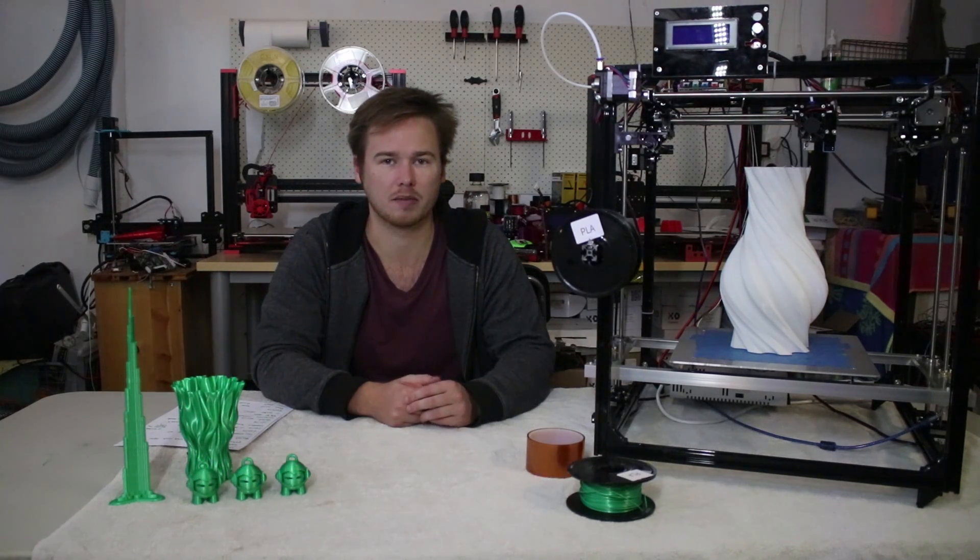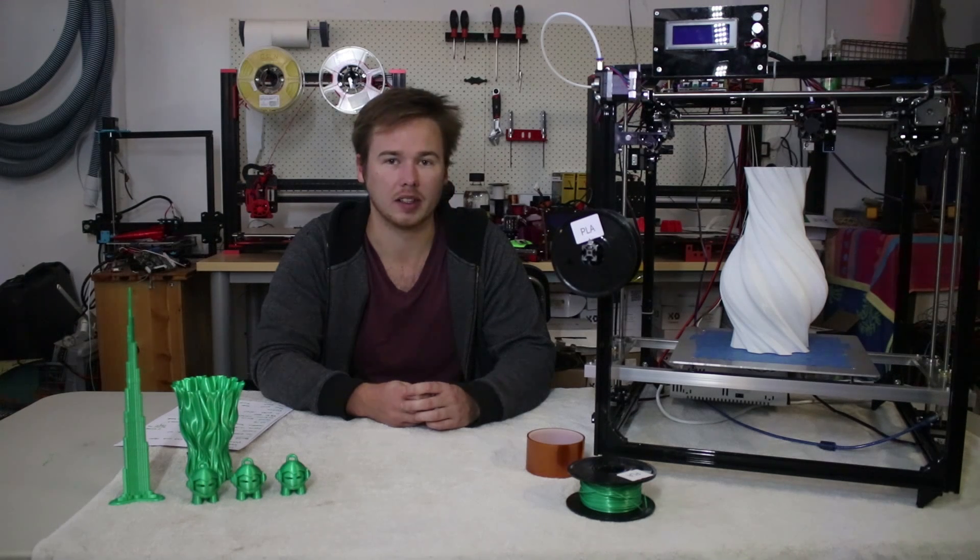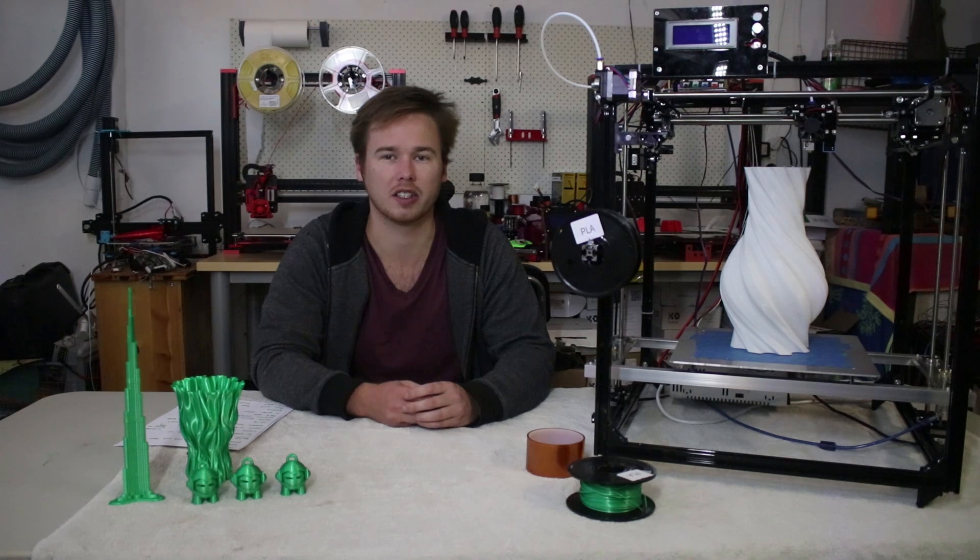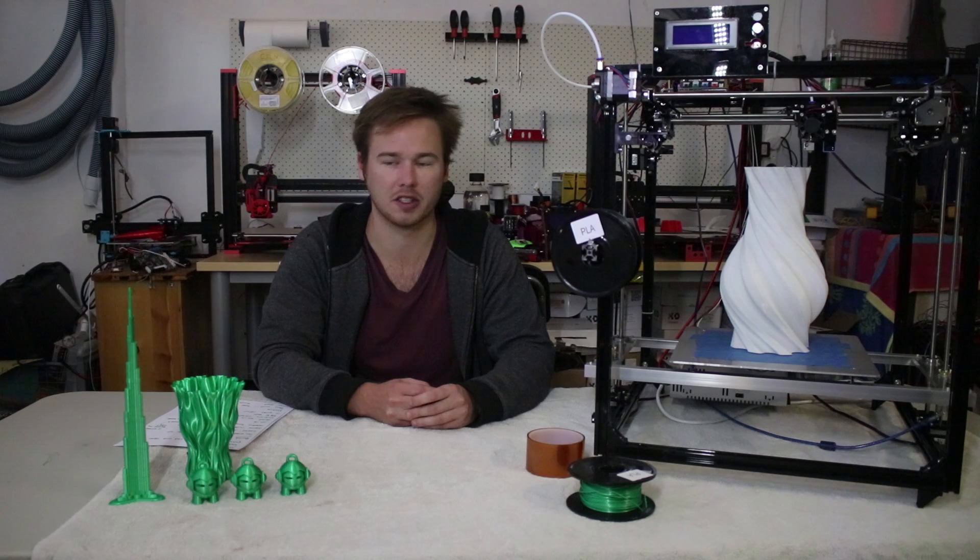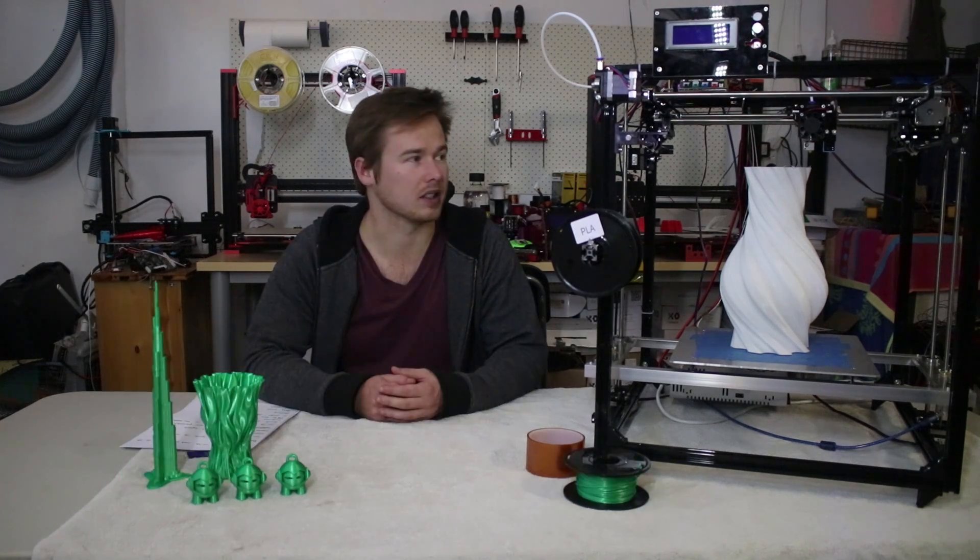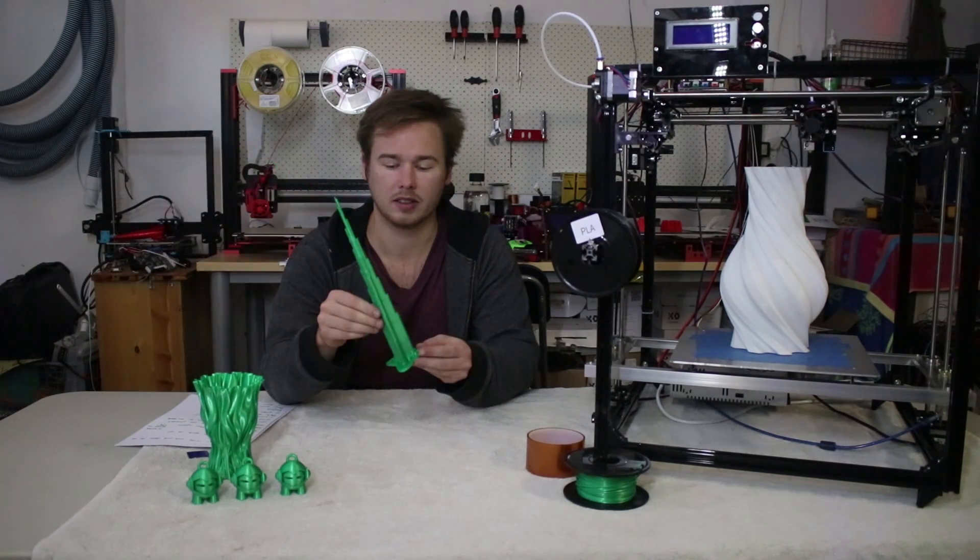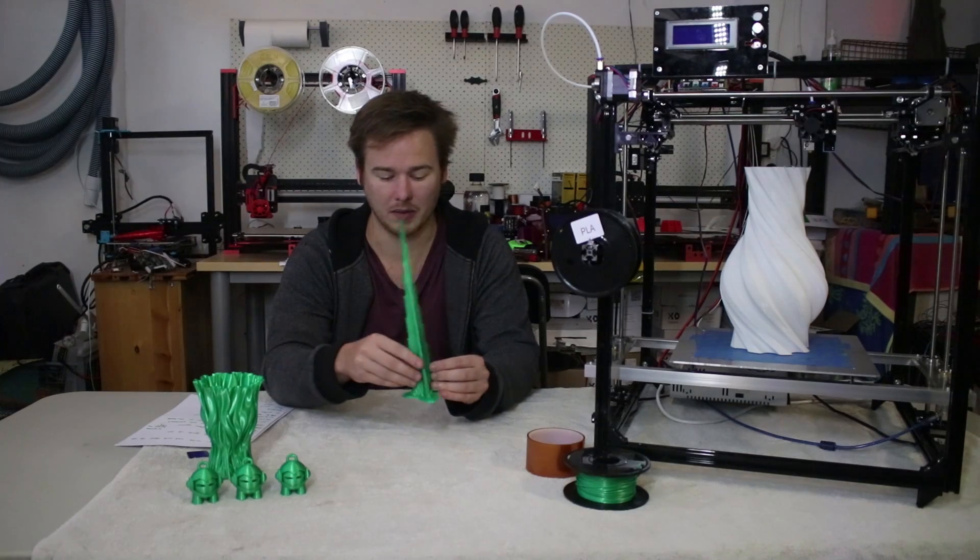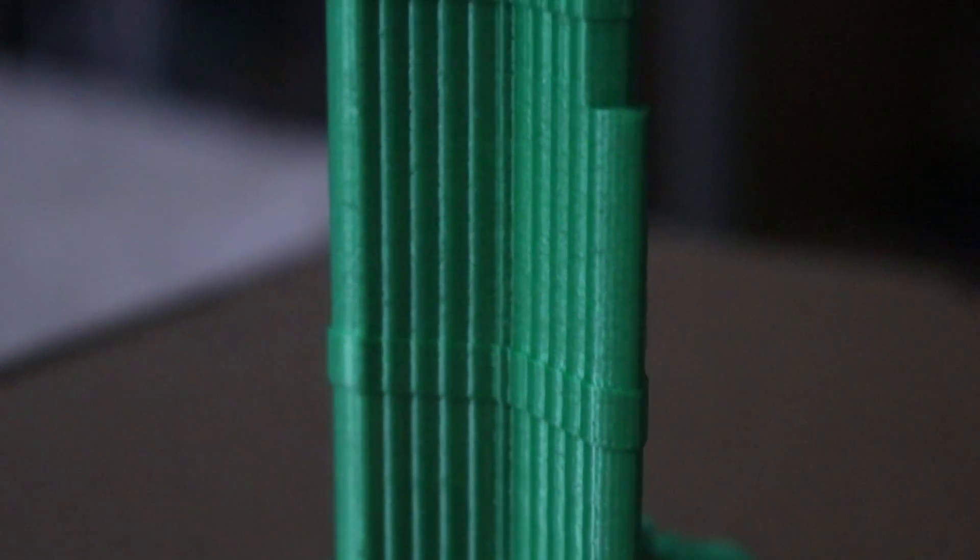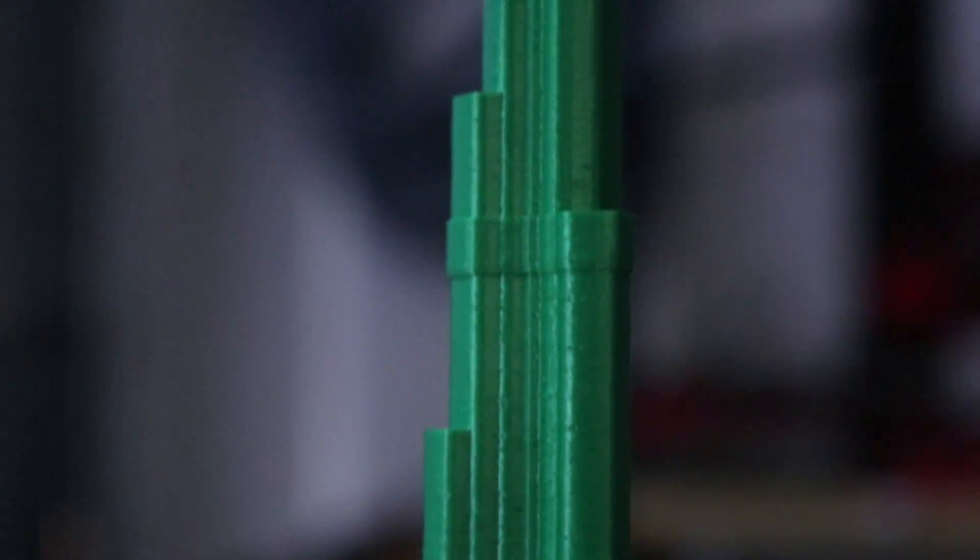So I loaded some of that in. And then before my first test print, I just quickly ran a Z offset kind of test print, just to do one layer, so I can set up the Z probe offset on the induction sensor. And then once I got that dialed in, that's the first print. So this is my first print here. This is a model of the Burj Khalifa, the world's tallest building. I'll show you some close ups of these. This came out flawlessly. I was actually surprisingly really impressed. I wasn't expecting much from this printer.